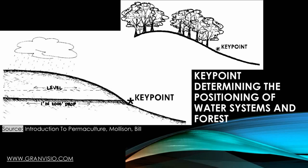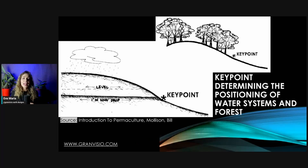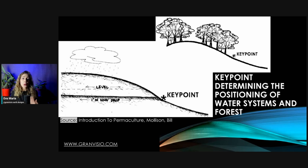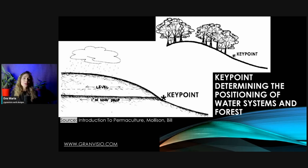The land above the key point should be forested, and the land below the key point can be used for things like growing crops, having orchards, or creating pasture areas. Now imagine the forest on this land starts at the highest point and goes down to the key point.